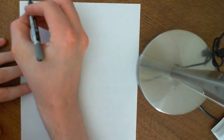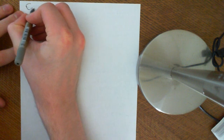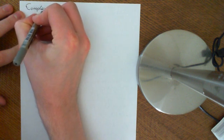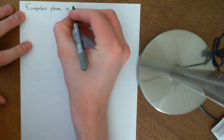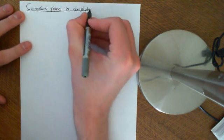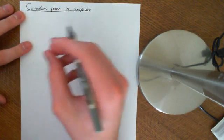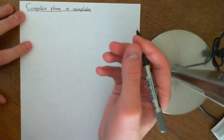Welcome to this next video in the playlist on functional analysis. In this video, what we're going to prove is that the complex plane is complete. We're going to use what we've seen in the previous videos about limits in the complex plane and their relation to limits of the sequences of the real and imaginary components, which are just sequences of real numbers.